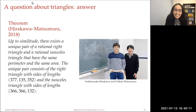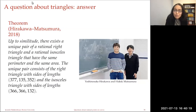The answer to the question posed by Hirakawa and Matsumura is that, up to similitude, there exists a unique pair of a rational right triangle and a rational isosceles triangle having the same perimeter and the same area. The unique pair consists of the right triangle with sides 377, 135, and 352, and the isosceles triangle with sides 366, 366, and 132. Just one — it's amazing.